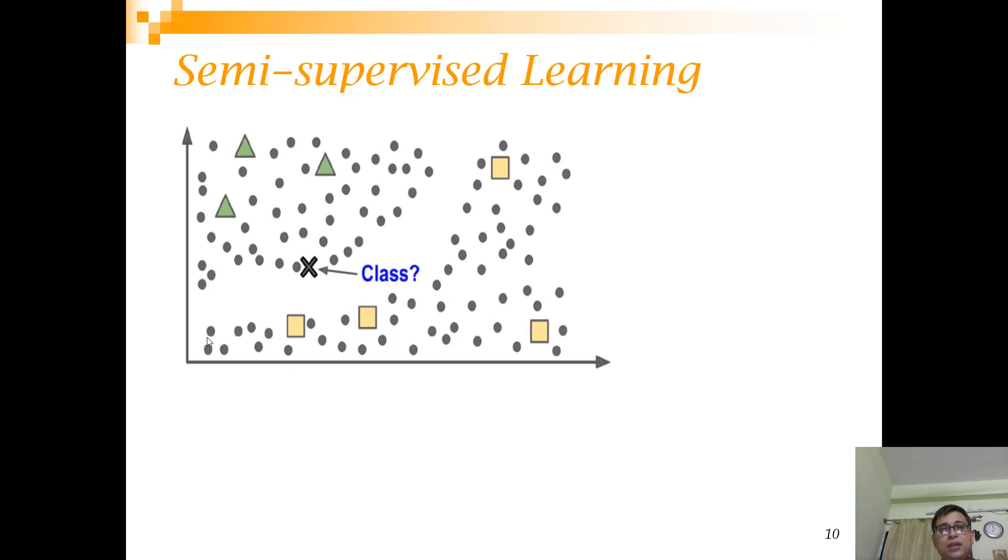Then we have semi-supervised learning. Semi-supervised, as the name suggests, it is somewhere between supervised and unsupervised. You have a lot of data available, but not all data are labeled. And what you want to do is you want to use the labeled data to actually increase your training corpus. You have already some classified documents and then you use that to classify some of the unlabeled data to increase your training size.